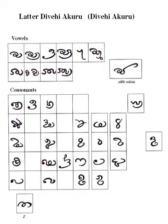Geiger, Wilhelm. Maldivian Linguistic Studies. Reprint 1919 edn. Novelty Press. Mail. 1986.